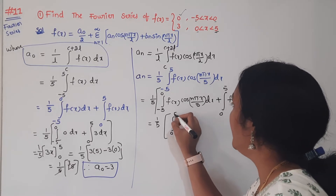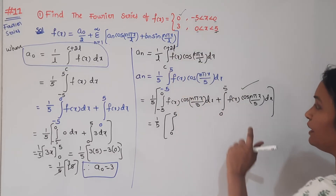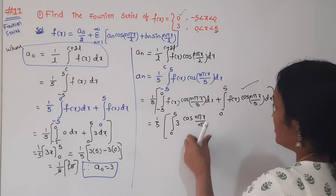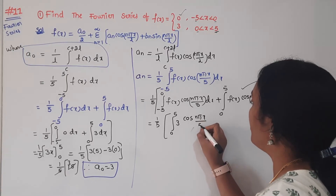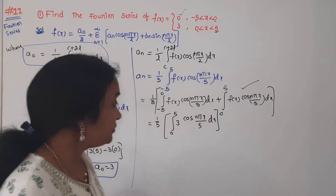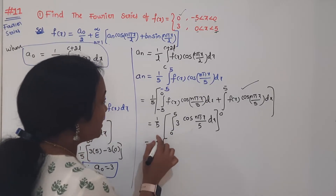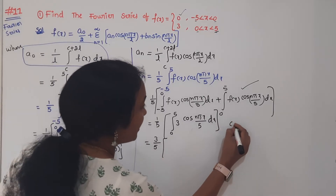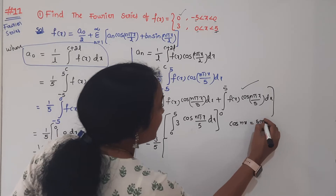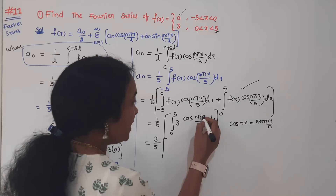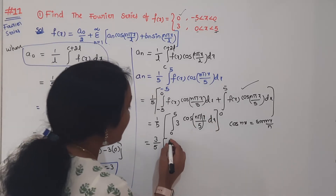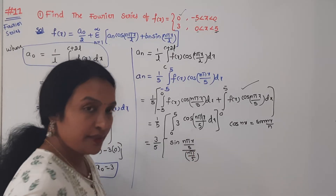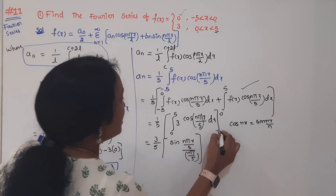When x lies from 0 to 5, the function value is 3. So Aₙ = 1/5 × integral from 0 to 5 of 3 cos(nπx/5) dx. Taking 3 as constant: Aₙ = 3/5 × [sin(nπx/5) / (nπ/5)] from 0 to 5, which simplifies to 3/5 × 5/(nπ) × [sin(nπx/5)] from 0 to 5.